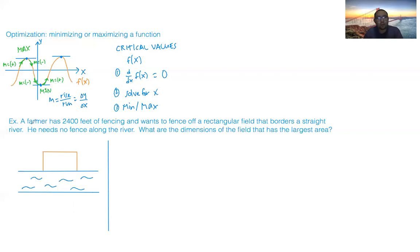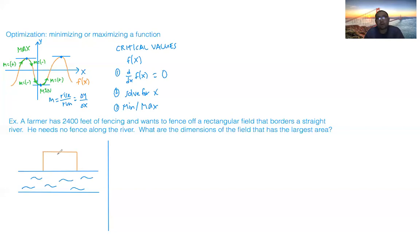A farmer has 2400 feet of fencing and wants to fence off a rectangular field that borders a straight river. He needs no fence along the river. What are the dimensions of the field that has the greatest area? The image shows the river in blue and the fence on three sides — no fencing along the river side.